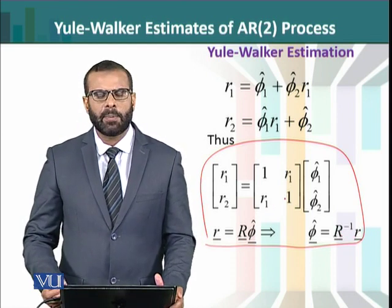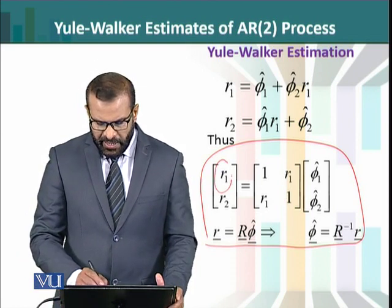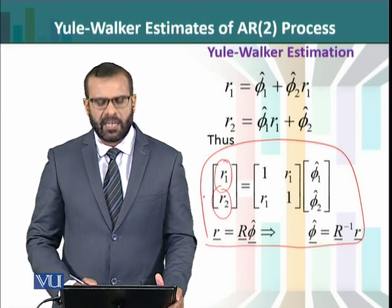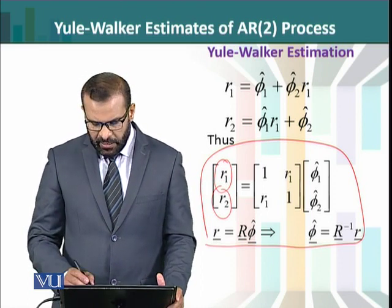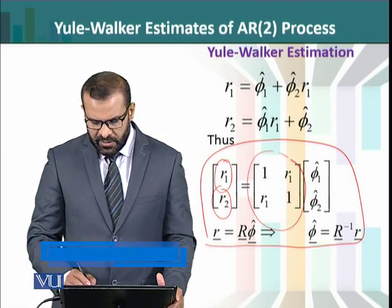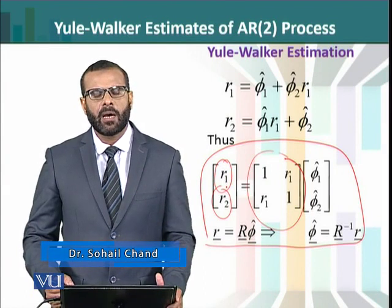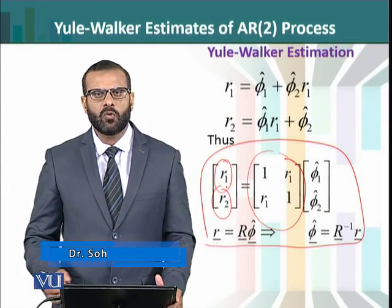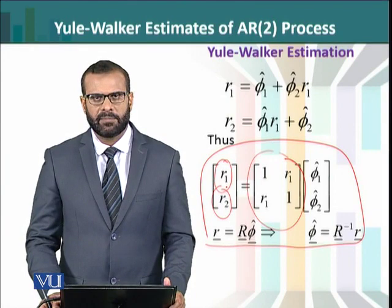So if we have a sample time series, we can calculate the sample autocorrelations here. We can obtain the numbers, construct this matrix, invert this matrix, and multiply it by the r vector. These are the steps to get the Yule-Walker estimates, and we can obtain phi hat from each region.